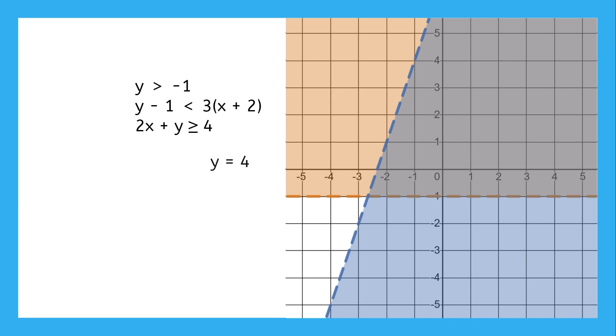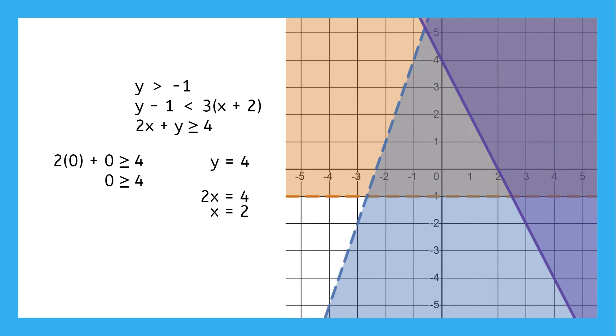The final inequality is in standard form, so we ignore each variable's term to find the other variable's intercept, draw a solid line through them, and then test (0,0), and we find that it is not a solution. So we shade the other side of the line.